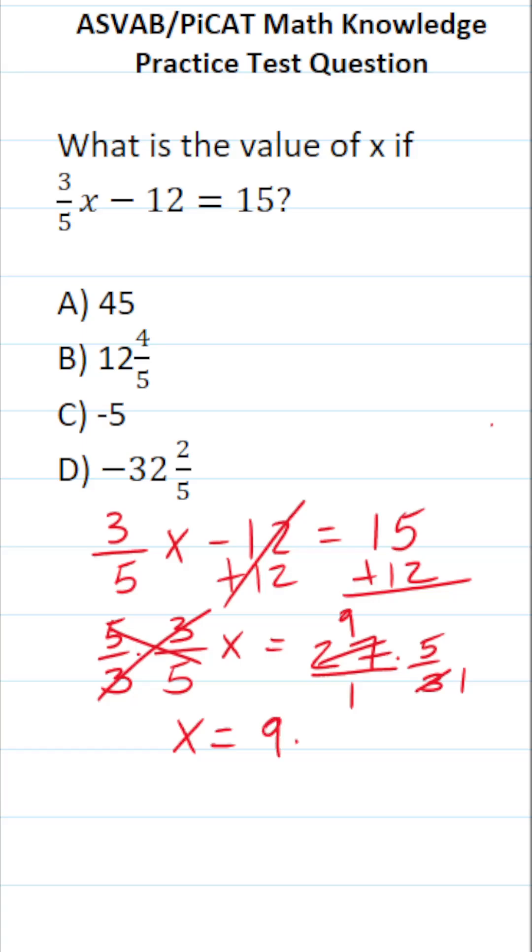9 divided by 1 is 9 times 5 over 1. 5 divided by 1 is 5. 9 times 5 of course is 45. So the answer to this one is A.